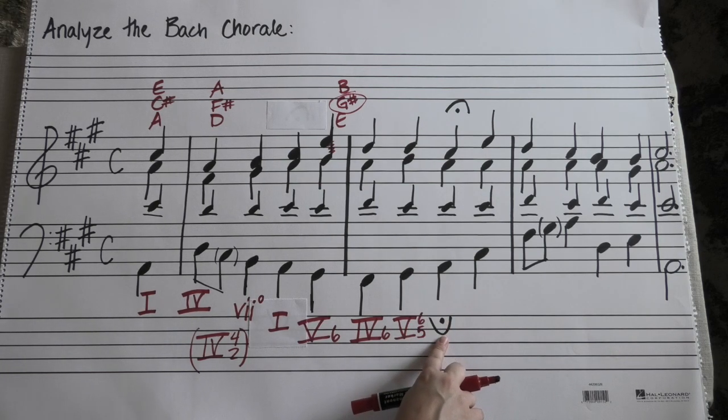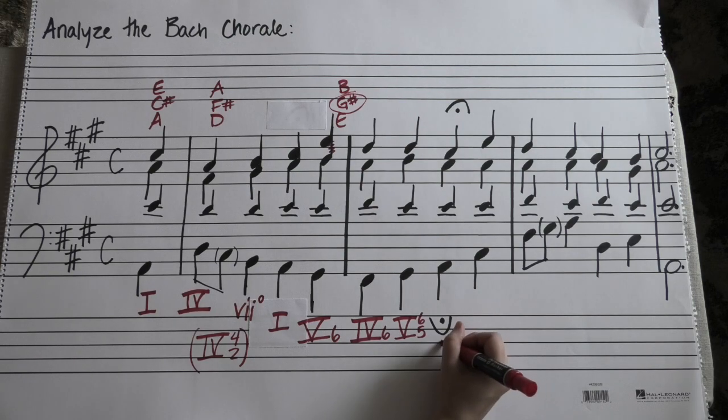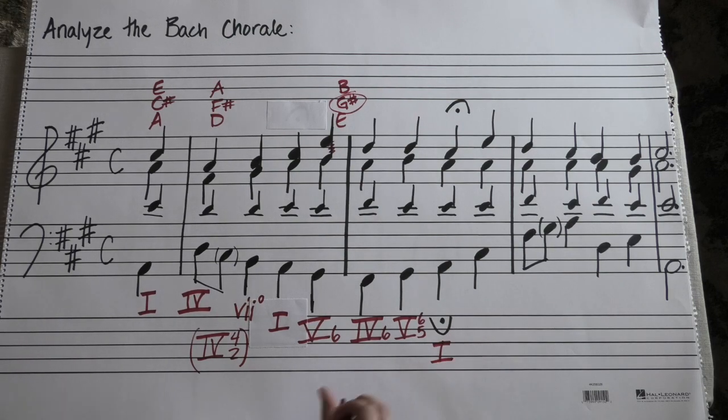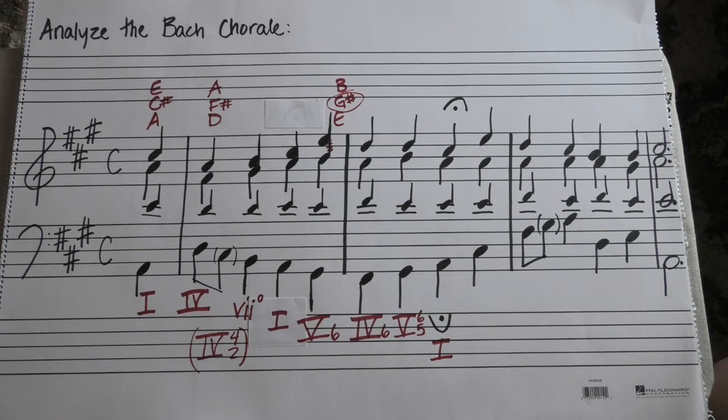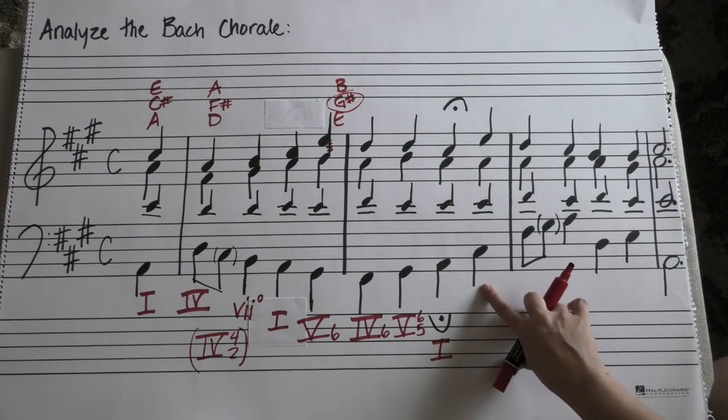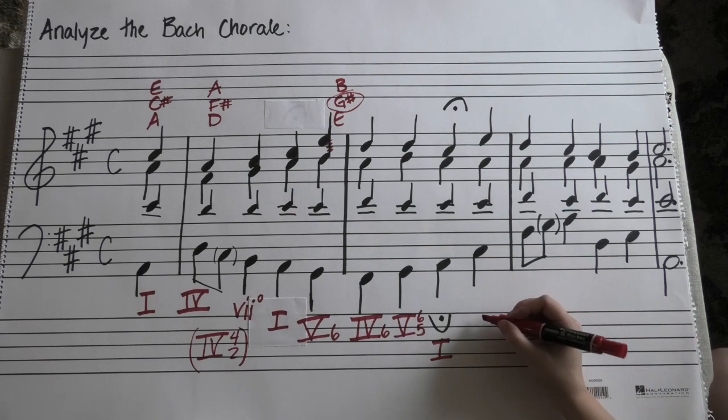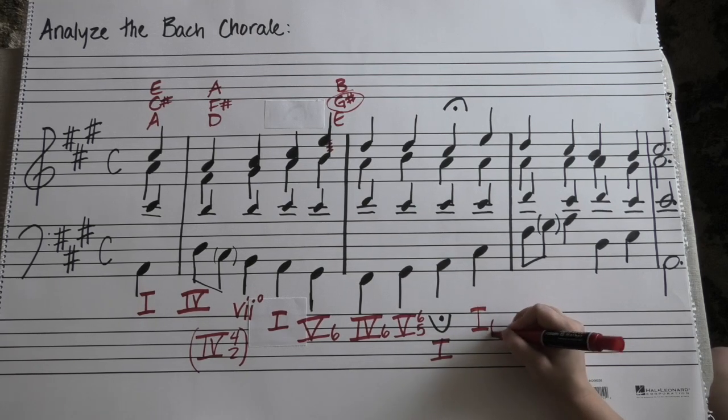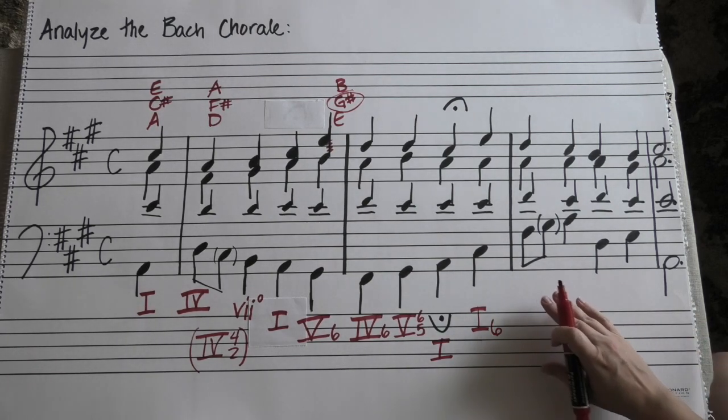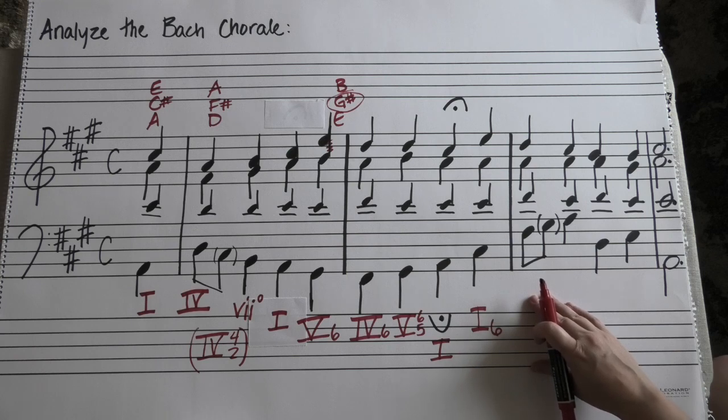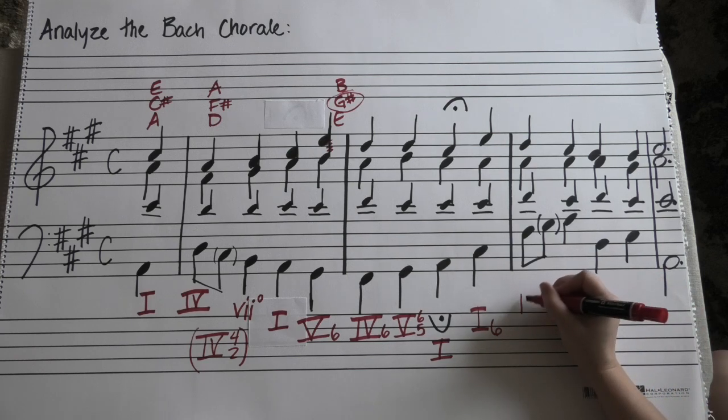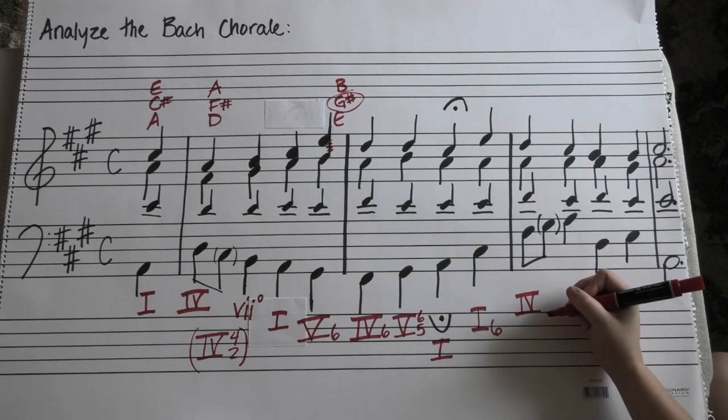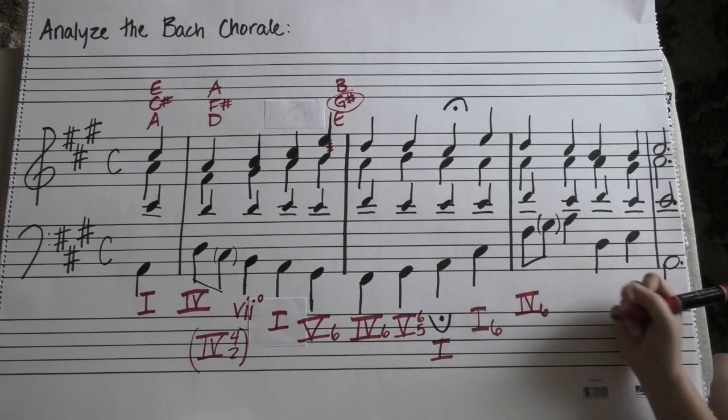And then we hold on this chord, which is a one, but it's not the end. Okay. From here after the fermata, we have a one chord. Also, it's still a one chord, but now it's in first inversion. And from there we go to a four chord. That's in first inversion.